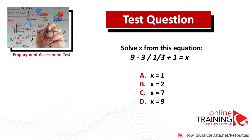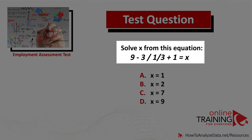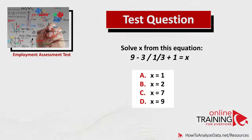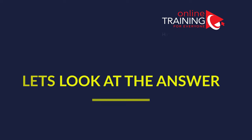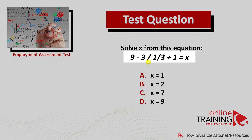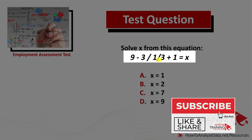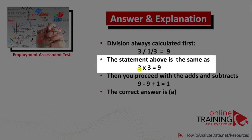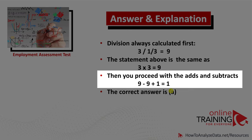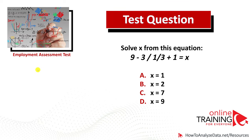Here's a tricky question that a lot of candidates answer incorrectly because they miss an important combination in the fraction. Solve x from the given equation. Please pause the video and try to calculate the correct answer. The tricky part is that you need to divide 3 by 1/3, which equals 9 — not multiply 3 by 1/3 to get 1. This is equivalent to multiplying 3 by 3. After completing the additions and subtractions, you get to 1. The correct choice is A.